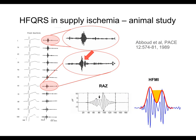Early studies clearly demonstrated the changes in HFQRS due to ischemia in dogs. The diagram on the left shows the significant changes in the high-frequency signal after occlusion of the LAD artery, while the conventional low-frequency signal is much slower to respond. It is interesting to note that reduced amplitude zones, or RAS, are developing.